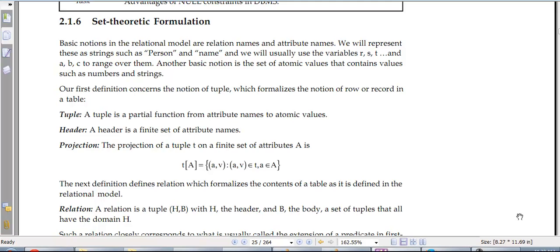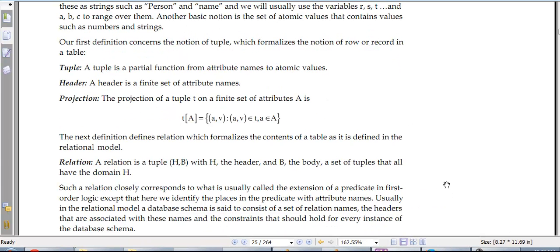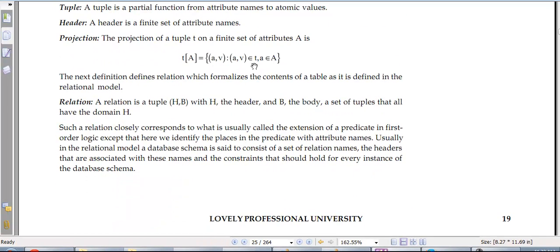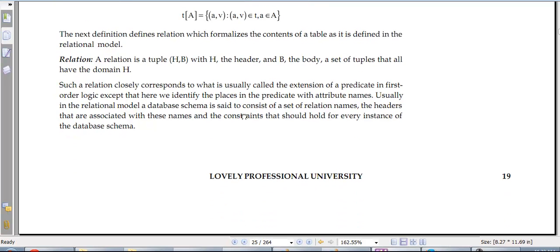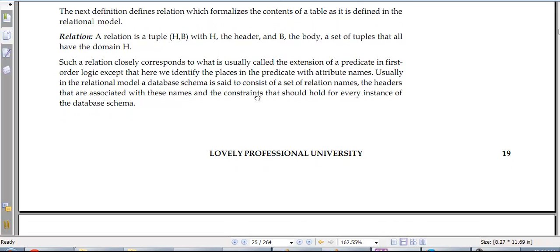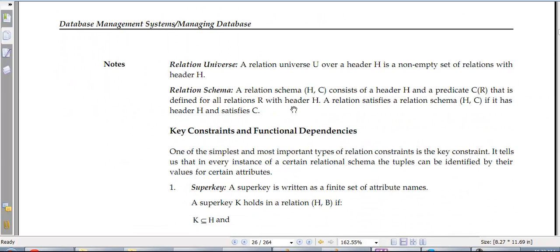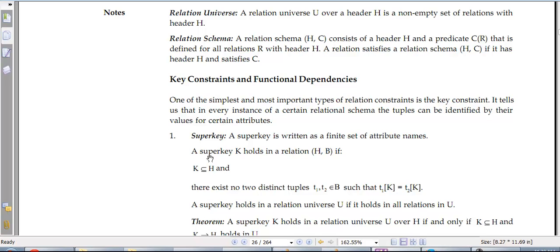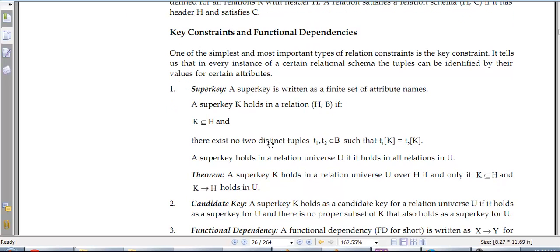So when we start at it we look at something called a tuple which is a partial function of attribute names to atomic values. We have the header as a finite set of attribute name projection. The projection of a tuple on a finite set is T_A = {A:V | AV belongs to T and A belongs to A}. The relational tuple is tuple (H, V) where H is header, V is the body. And relational universe U over the header is a non-empty set of relations with header H. The relational scheme HC consists of header C and R that is defined for all relations H and R.